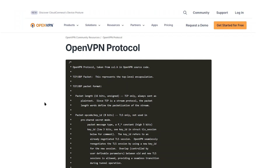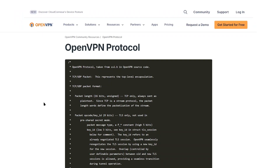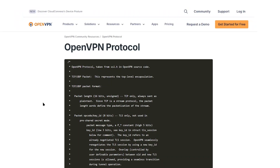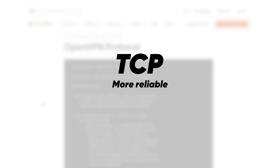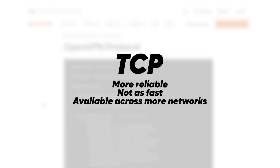OpenVPN also supports a lot of different features. There are two types: TCP and UDP — basically sub-protocols. TCP is the more reliable form of OpenVPN: it won't be as fast, but it will be available across more networks and is better if you need every single bit of data to reach its destination — for example, file transfers.